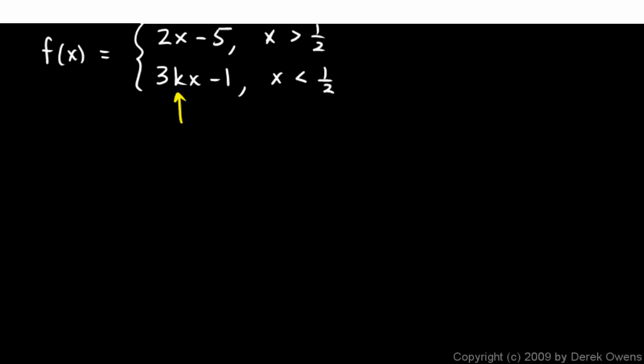And this number k here, that's some constant, some number that we don't know, we're going to find it. The problem is to find a value for k such that the limit exists at x equals 1 half.